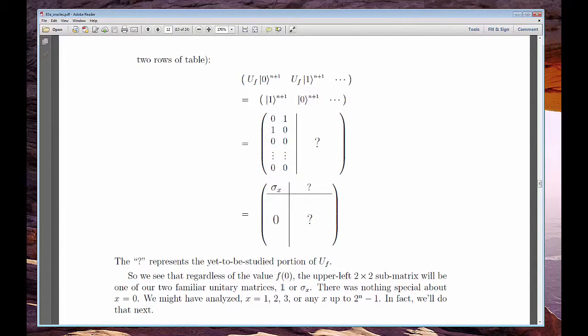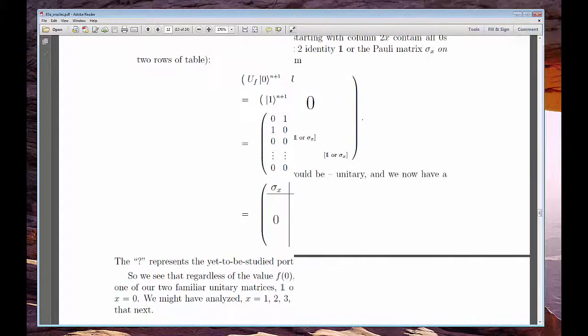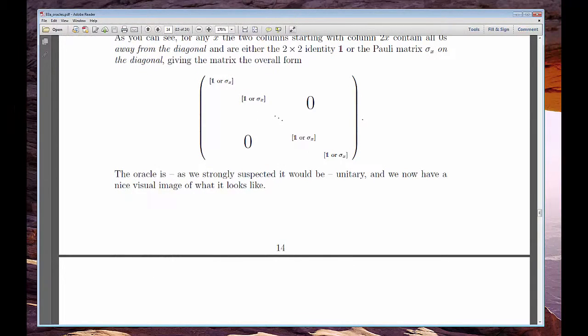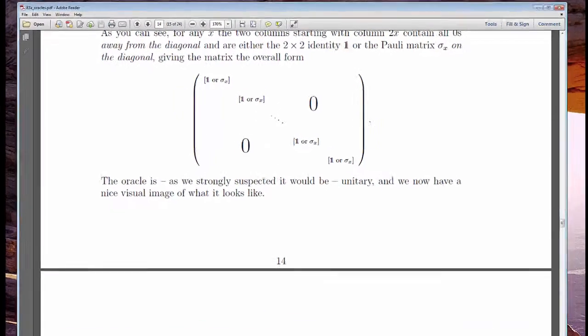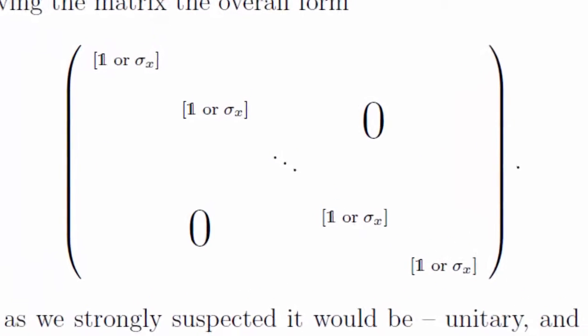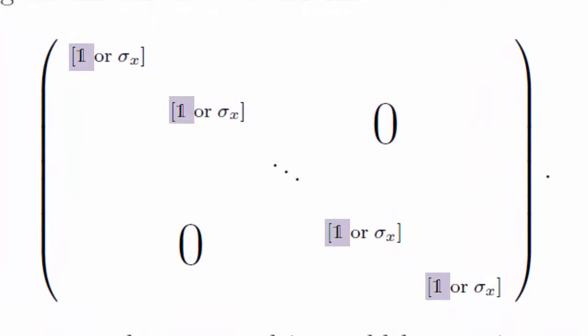Our diligence pays off, though, because at the end, we find that this necessarily larger matrix is still composed of only two moving parts, the 2x2 identities, and the Pauli-spin matrices, sigma x.